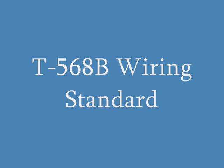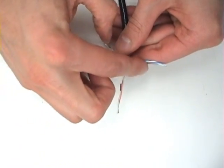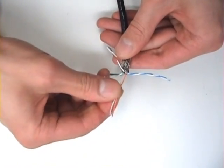Now, in this demonstration, I am using the wiring standard T568B to make a straight through patch cable. This wiring standard designates the color code.